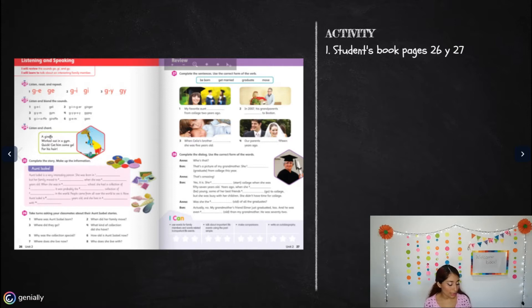Exercise 24 says listen and chant. I'm going to read it one time and the next time I want you to repeat with me. It says: A giraffe worked out in a gym. Quick, get him some gel for his hair. Now I want you to read it with me at the same time. One, two, three. A giraffe worked out in a gym. Quick, get him some gel for his hair.